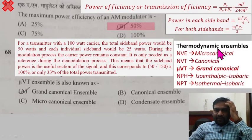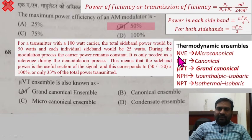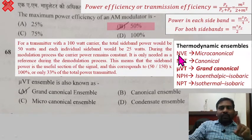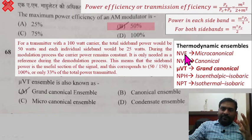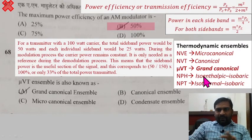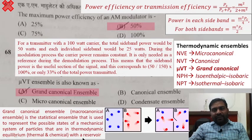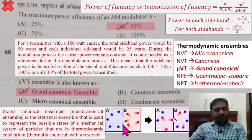Question 68: μVT ensemble is also known as. In thermodynamic ensembles: μVT — when μ (chemical potential), V (volume), and T (temperature) are constant — that is the grand canonical ensemble. NVE is the micro canonical ensemble, where N is number of particles, V is volume, E is energy. N, μ, V, T, P, H — different thermodynamic potentials. Grand canonical is asked here, so option A is correct. To maintain this, the system is kept open — it is not a closed system, it is an open system.